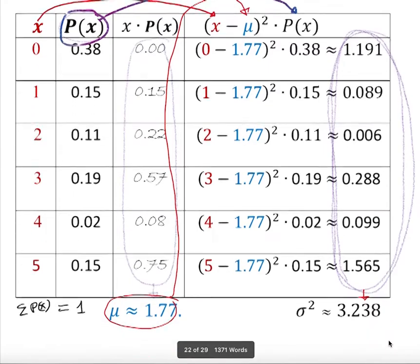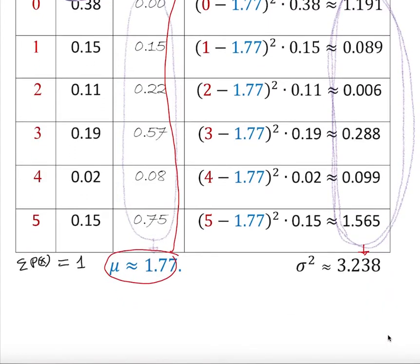Question asked us to find the variance. Now how do we find the standard deviation? Standard deviation is basically square root of 3.238. In any simple calculator you can use it. It should give you approximately 1.799. That is the standard deviation.